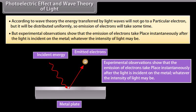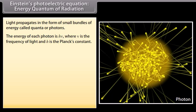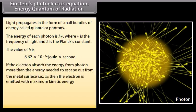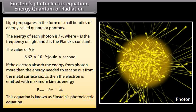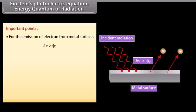Einstein's Photoelectric Equation: Light propagates in the form of small bundles of energy called quanta or photons. The energy of each photon is h-nu, where nu is the frequency of light and h is Planck's constant, with value 6.62 × 10⁻³⁴ joule-second. If an electron absorbs energy from a photon greater than the energy needed to escape from the metal surface (that is phi-zero), then the electron is emitted with maximum kinetic energy K-max = h-nu minus phi-zero. This equation is known as Einstein's photoelectric equation.